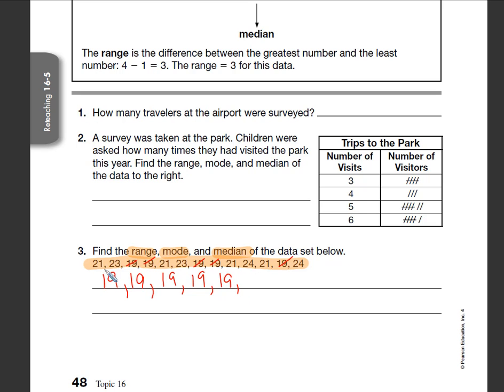Okay, I'm putting them in order from least to greatest. So the next greater number would be 21. So I have a 21, I have another 21, I have another 21, and there's another 21.